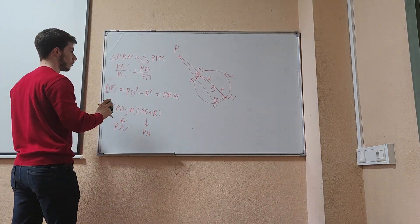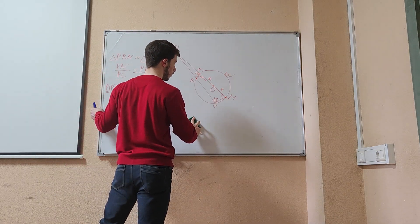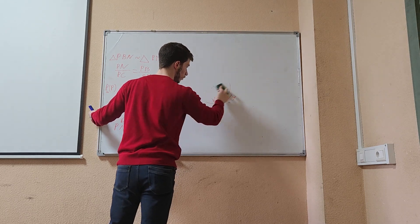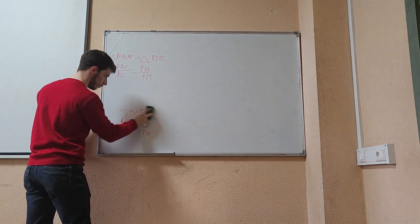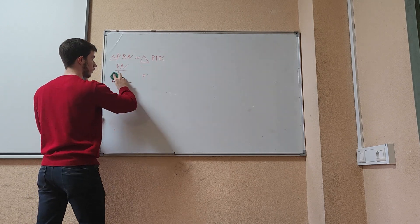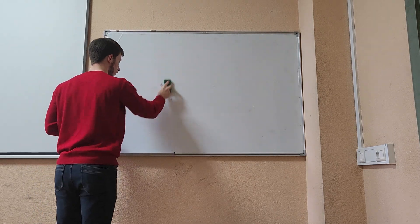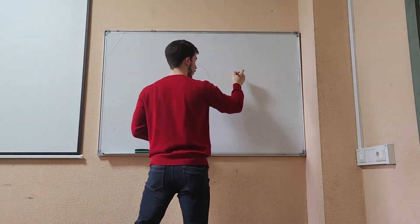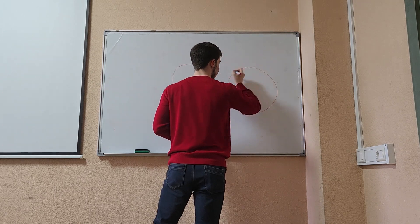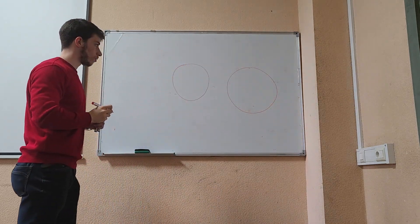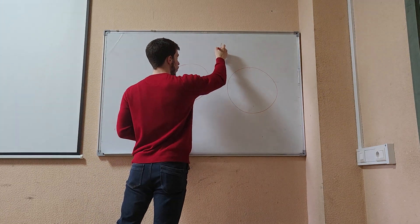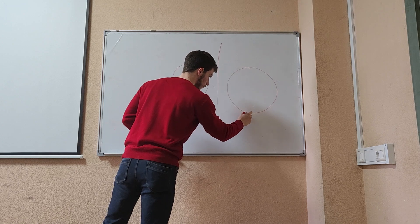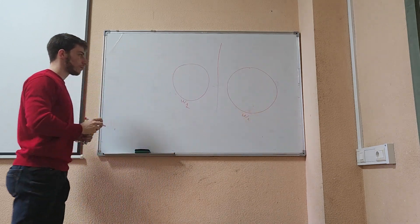After defining the power of a point, let's now define what is the radical axis. Given any two circles, the radical axis is the locus of all points whose power of point with respect to these two circles omega 1 and omega 2 are equal.